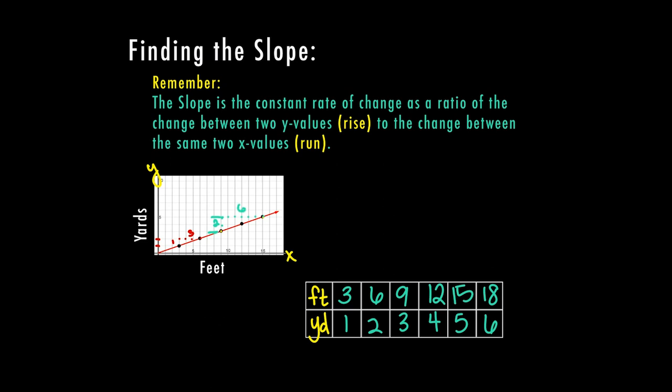So now, at first my slope was a rise of one and a run of three. When I did it the second time, my slope was a rise of two and a run of six.